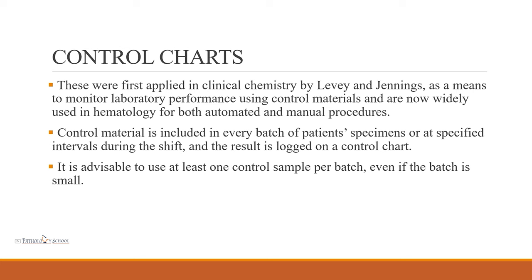Control charts were first applied in clinical chemistry by Levy and Jennings — hence the name LJ chart. They are a means to monitor laboratory performance using control materials and are now widely used in hematology. These charts are obtained on automated machines or can be plotted manually. Control material is included in every batch of patient specimens or at specified intervals during the shift, and the result is logged on the control chart. It is advisable to use at least one control sample per batch.